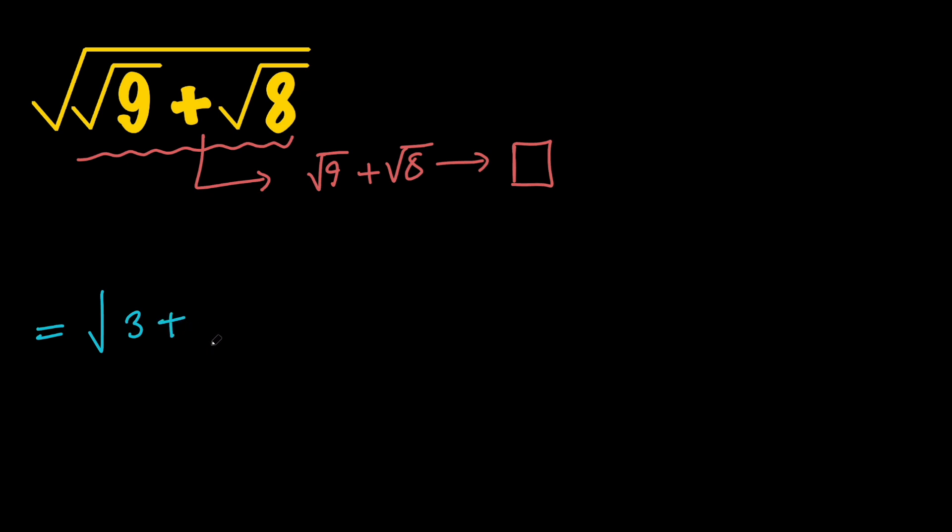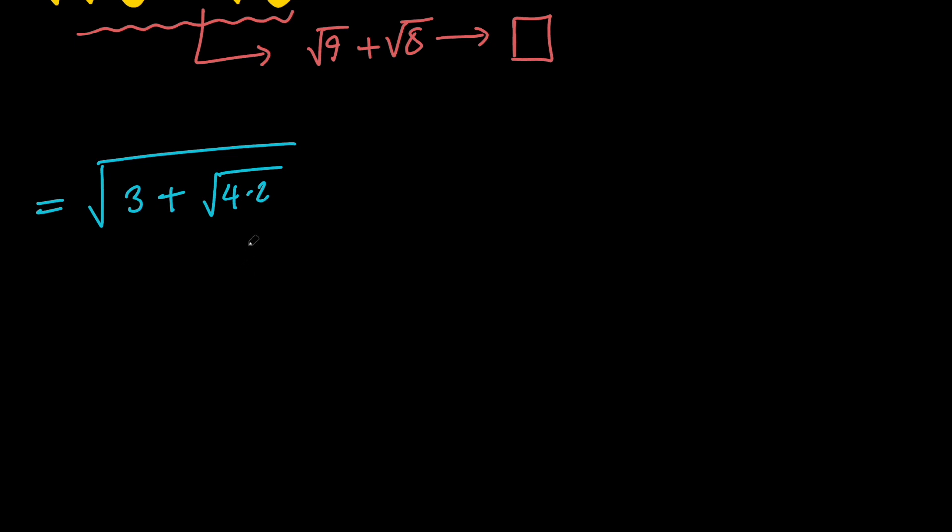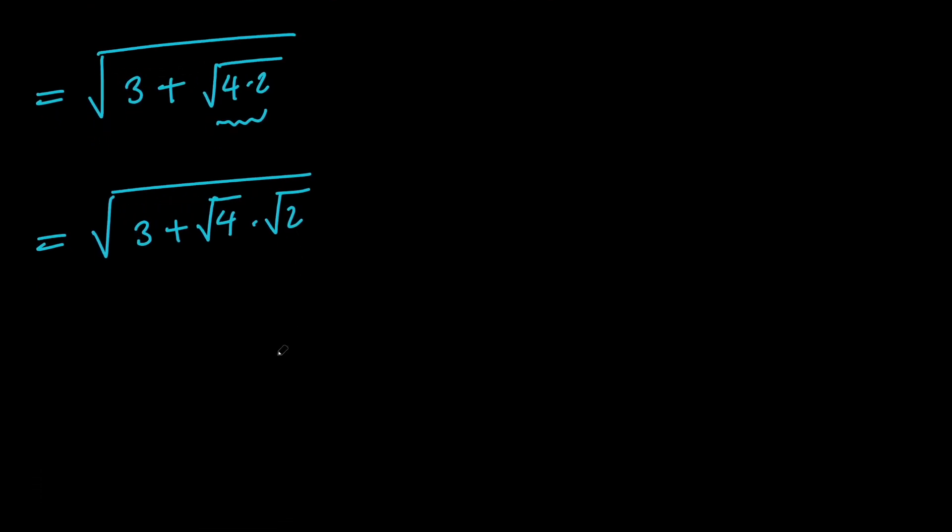But notice that 8 is just simply 4 times 2. Next, let's go ahead and separate these two. So we can write this as the square root of 3 + √4 × √2. Next, notice that the square root of 4 is 2, so we have the square root of 3 + 2√2.